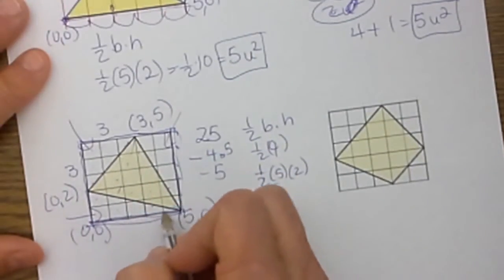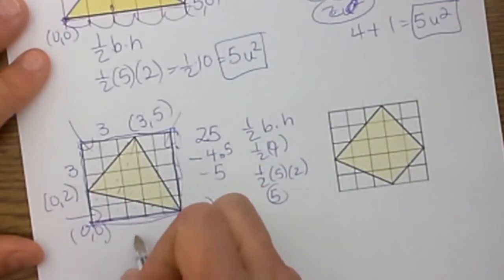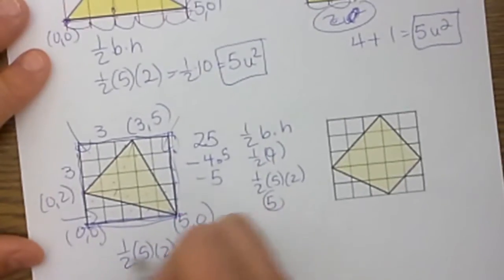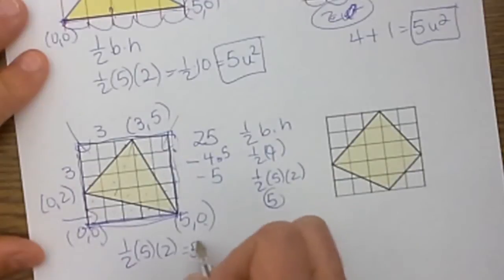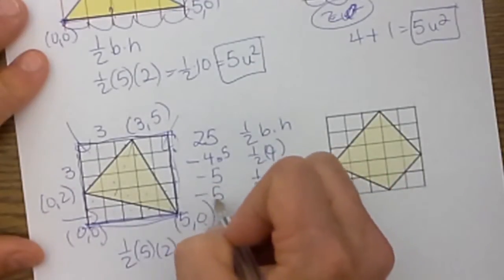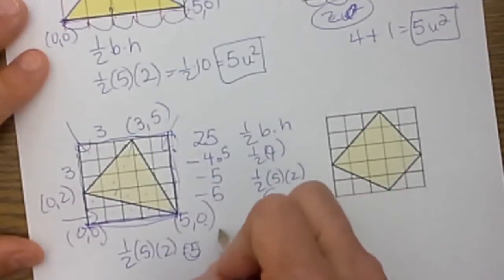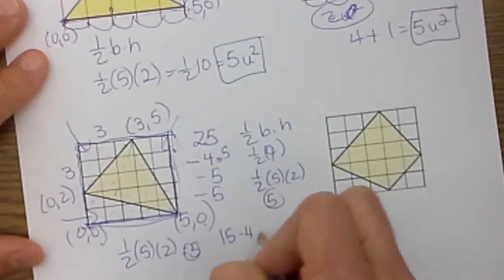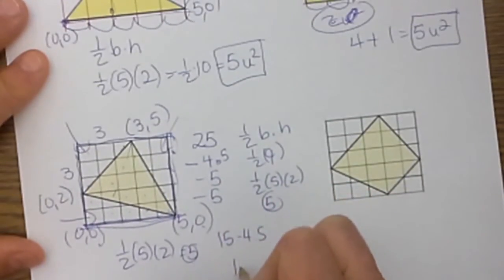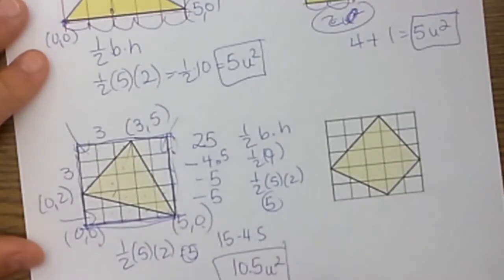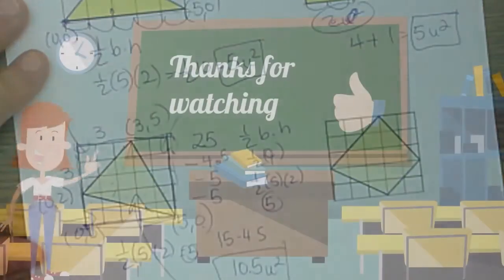And then let's go down here to the bottom. This one is 1,2,3,4,5 by 2. So again this is 1/2 of base times height and that also gives us 5 square units. So we subtract off a second 5. So 25 minus 10 is 15 and then 15 minus 4.5 is 10.5. So this is 10.5 square units for the shaded area.